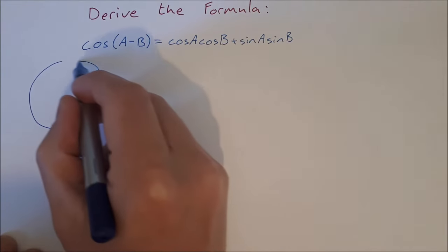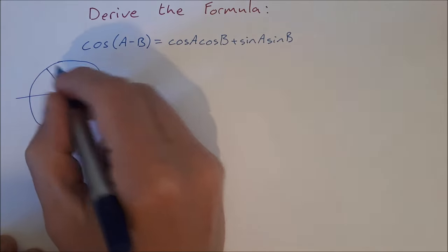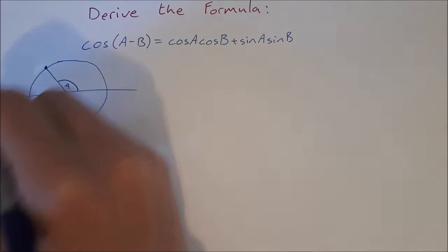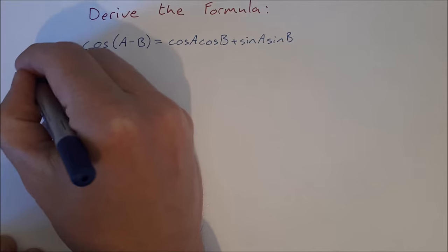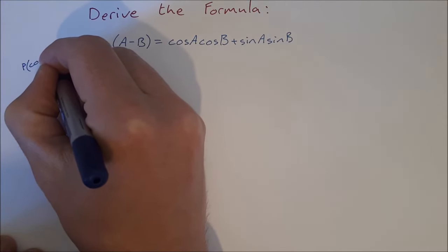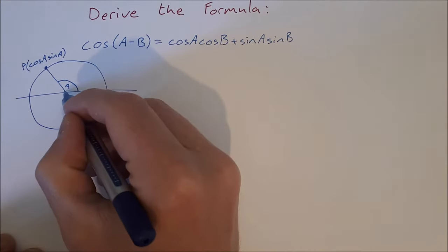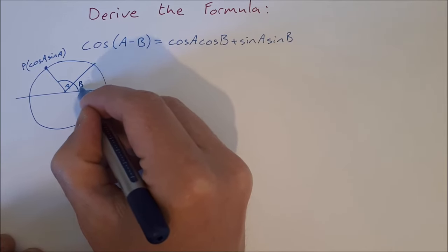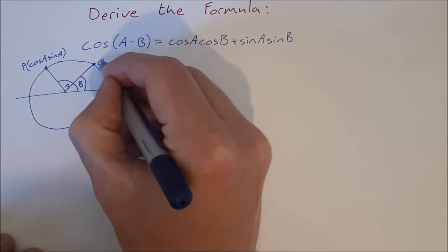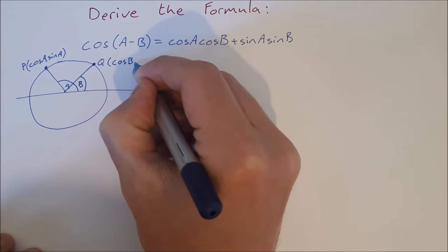We put in an angle a, and this gives us a point P with coordinates (cos a, sin a). We also put in an angle b, giving us a point Q with coordinates (cos b, sin b).